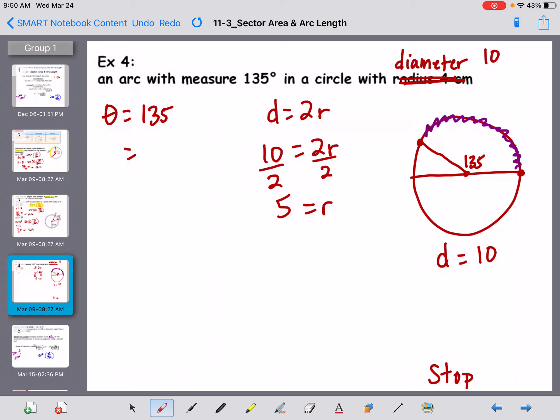So in a problem where they give you the diameter, you have to solve for the radius. Once I have the radius, my formula says 2 pi R, the angle divided by 360. So 2 pi, R is 5, 135, 135 over 360.